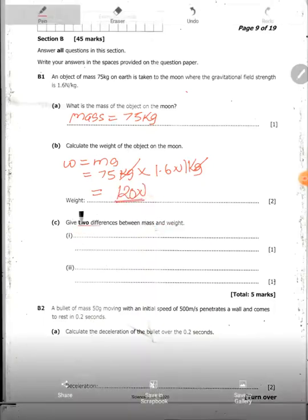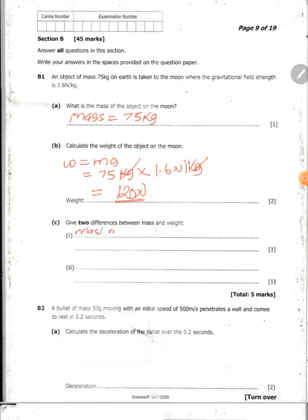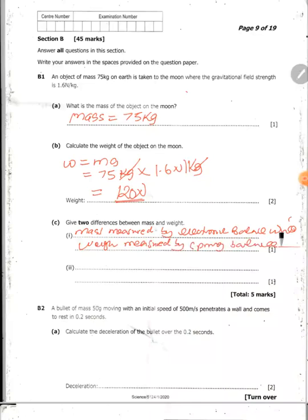Give two differences between mass and weight. In terms of measurement, mass is measured by electronic balance. Weight measured by spring balance. We have another one. We have to say mass measured in kilograms. Don't say kgs. Make sure you write it all. Weight is measured in newtons.